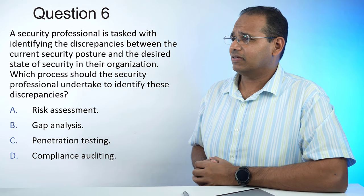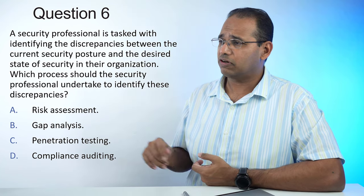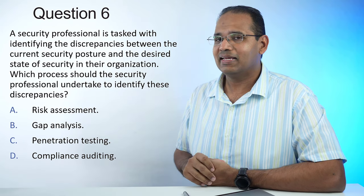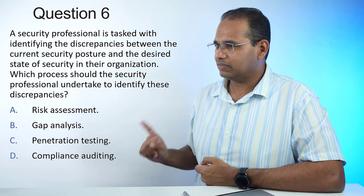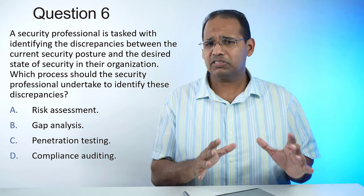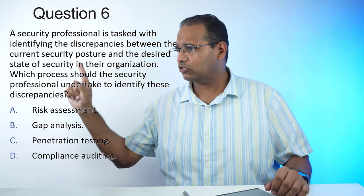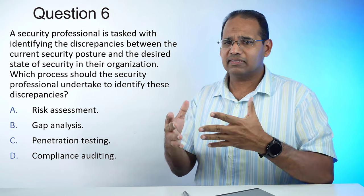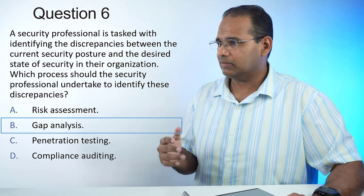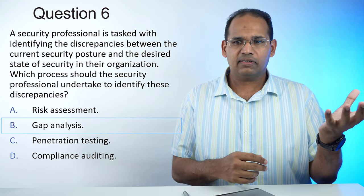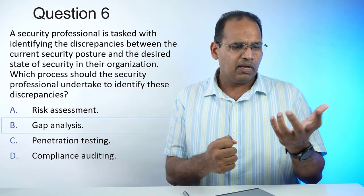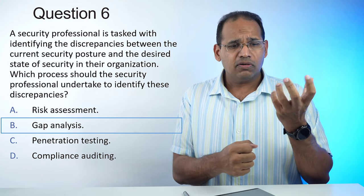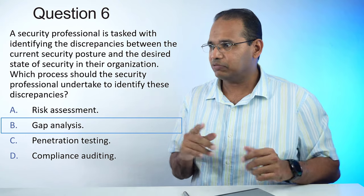Practice question number 6: A security professional is tasked with identifying the discrepancies between the current security posture and the desired state of security in their organization. Which process should they undertake? The answer is gap analysis. Gap analysis is when you look at where you are now versus where you want to be — like being 210 pounds and wanting to be 180 pounds. The gap is 30 pounds. Risk assessment identifies things that can affect your system. Penetration testing checks if security controls are working. Compliance auditing checks regulatory adherence.